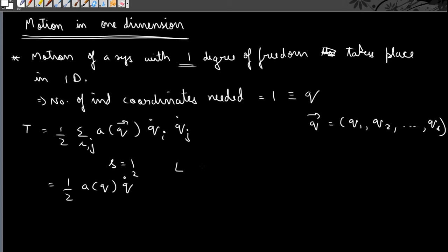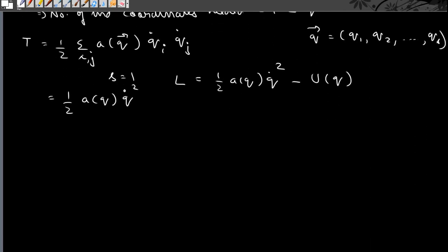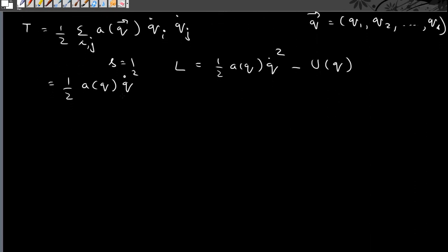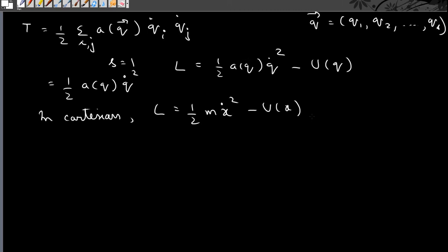So our Lagrangian for one degree of freedom will have the form: half a(q) — where q is just the single variable q — times q-dot squared, minus the potential function which depends only on the coordinates. In Cartesian coordinates, L becomes half m x-dot squared minus U(x).